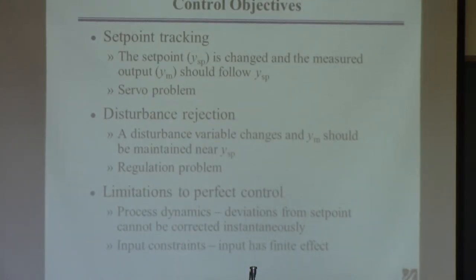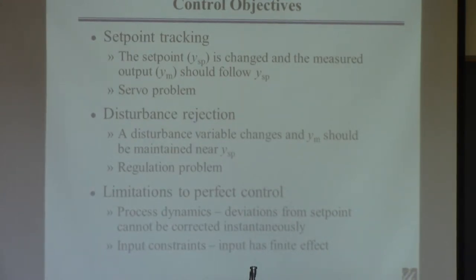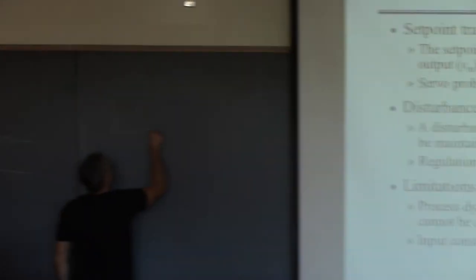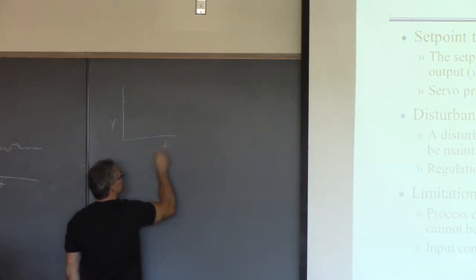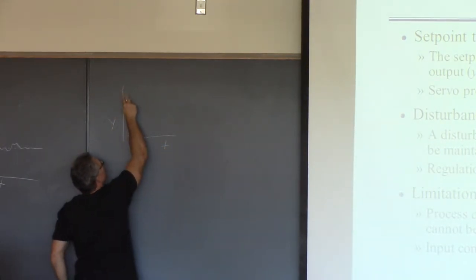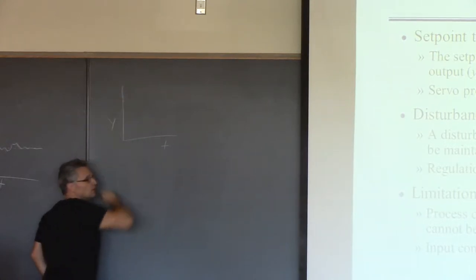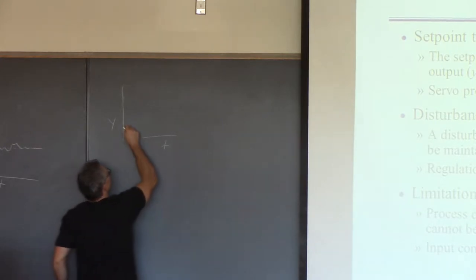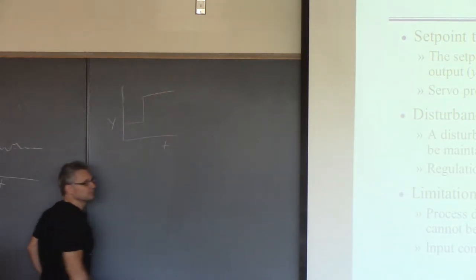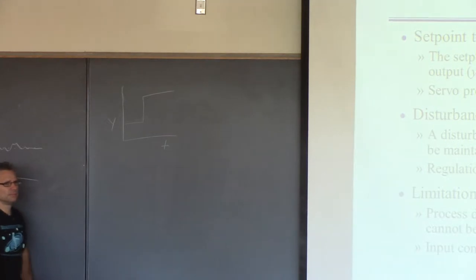The second possibility is what we call set point tracking. Here's the output at various times, and you might decide — you're in a plant, you're making a product — you'd like to increase the production rate because you think you can make more product and sell it. So you're going to increase the production rate.